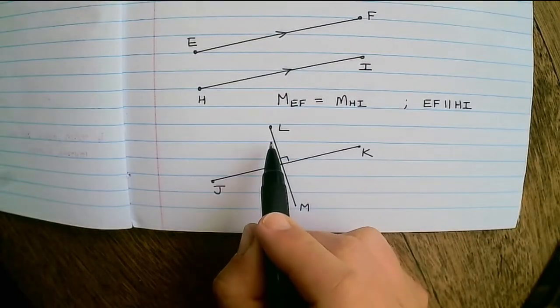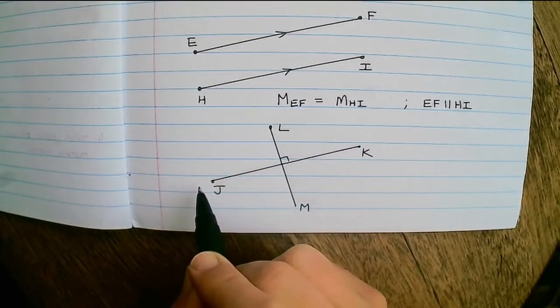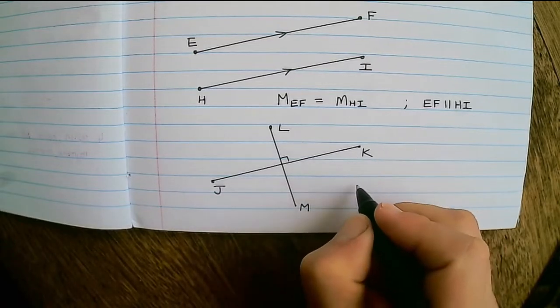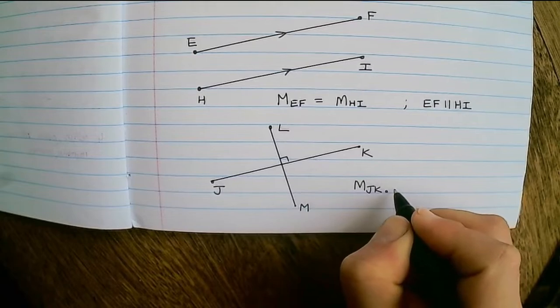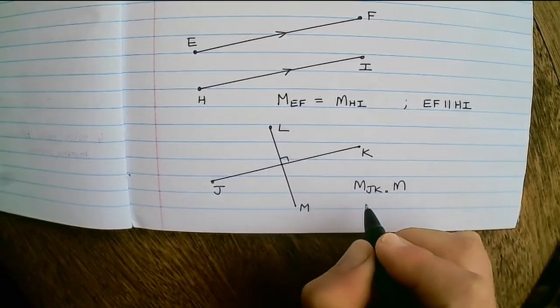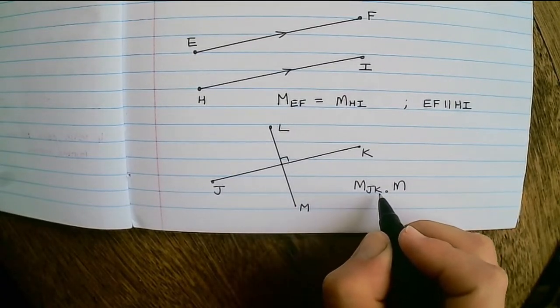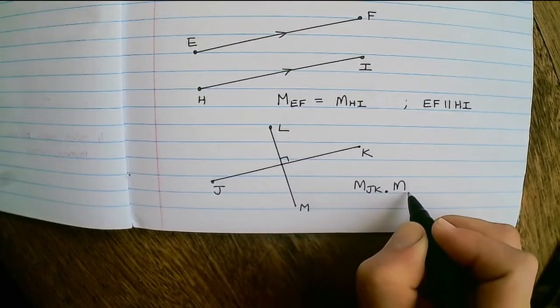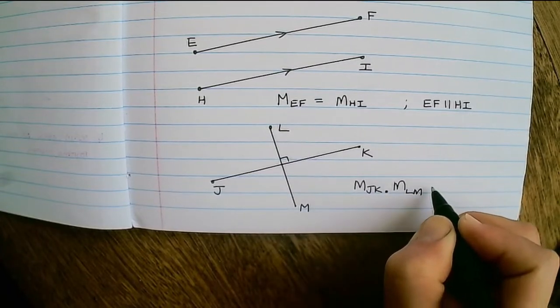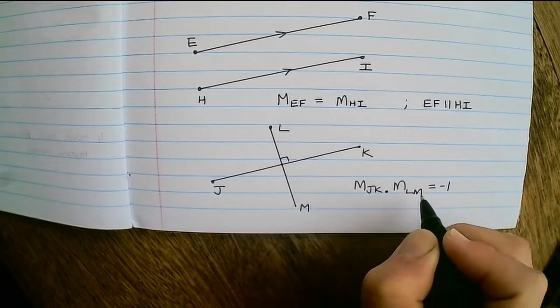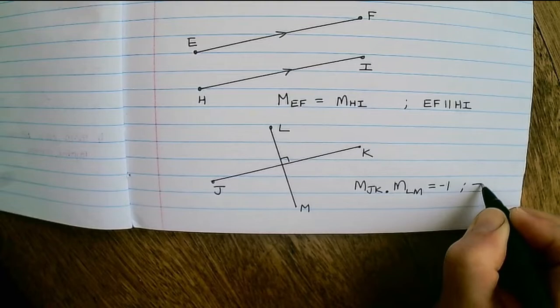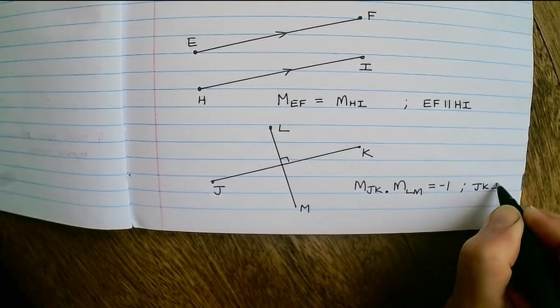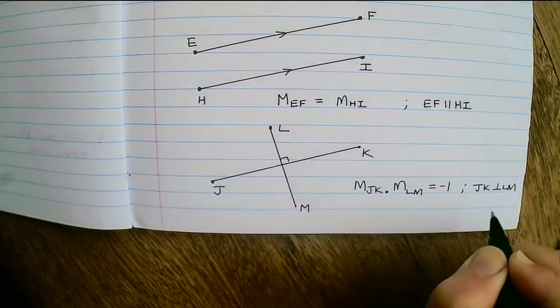And when lines intersect at 90 degrees, then the product of their gradients would be negative one. So the gradient of JK multiplied with the gradient of line LM would be equal to negative one, and when we get to a property like this we can say JK is perpendicular to LM.